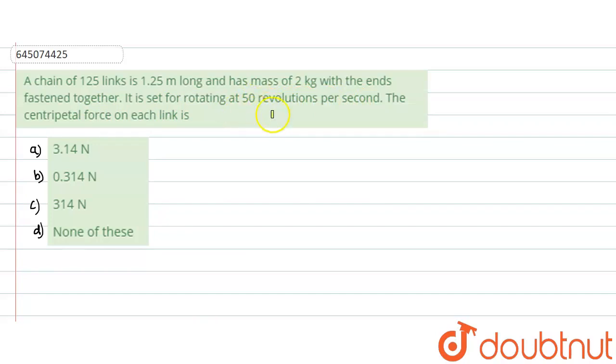So this 50 revolutions per second is the frequency, because in one second it is carrying out 50 revolutions which is the frequency. We need to find what is the centripetal force on each link. Let us denote the number of links to be capital N. This value is given as 125.